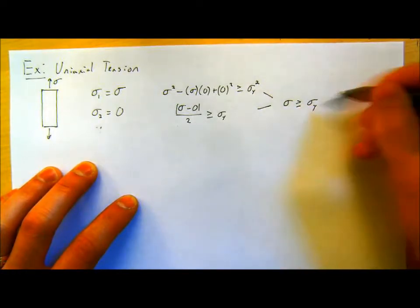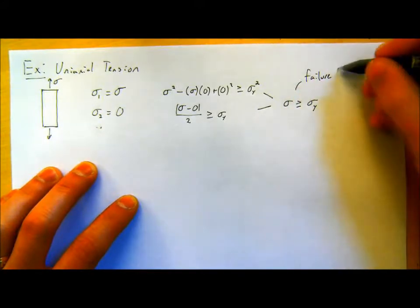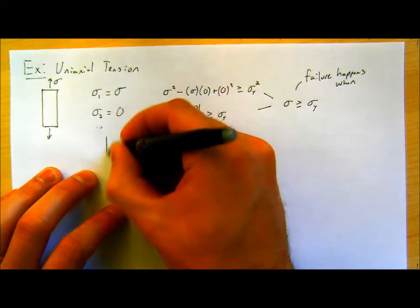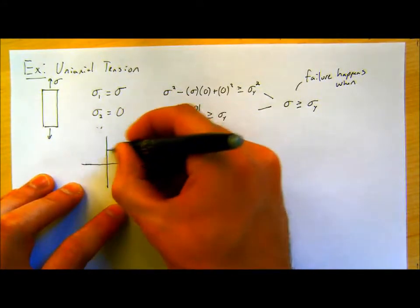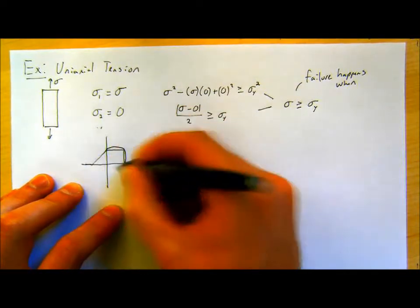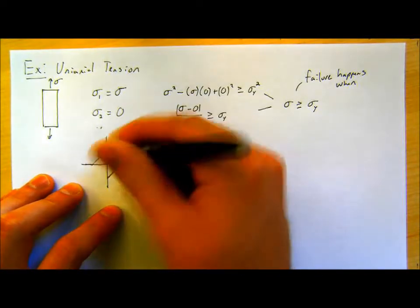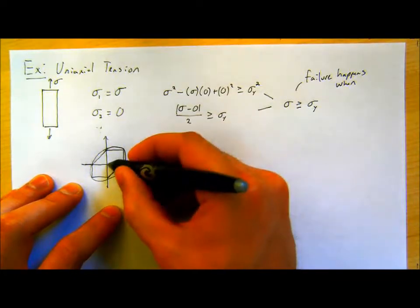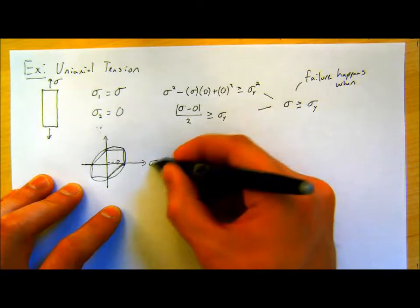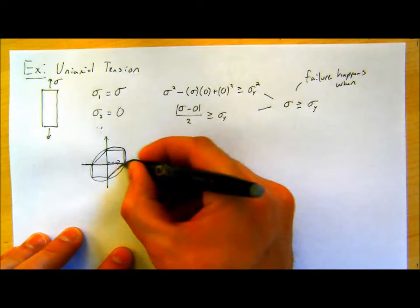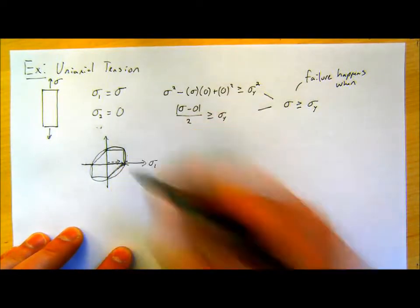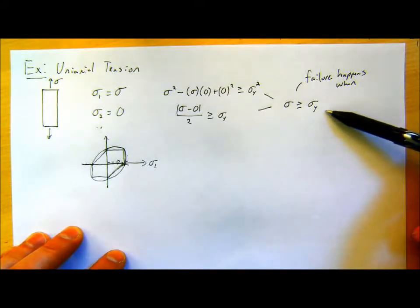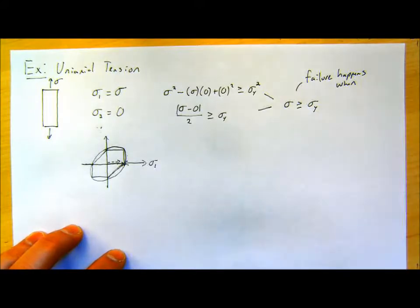Failure happens when sigma is greater than sigma yield. Both criteria get to the same point. In our stress space, we're traversing along the sigma1 axis, and right when we pass the point of our failure surface, we get failure. This is what we would expect from our uniaxial tension experiment — this is actually where we get this yield strength number. When we pass the uniaxial tensile strength, failure happens, and using these failure criteria we end up at that same thing.